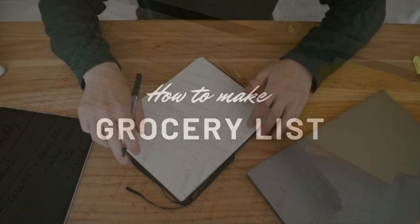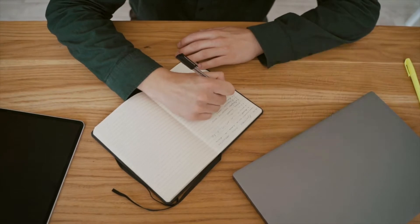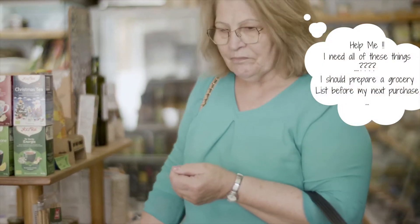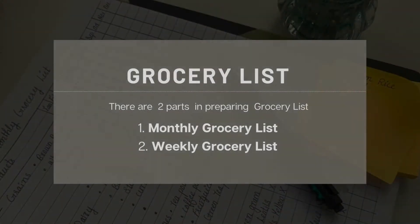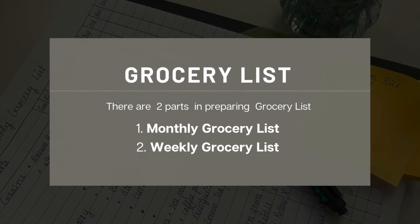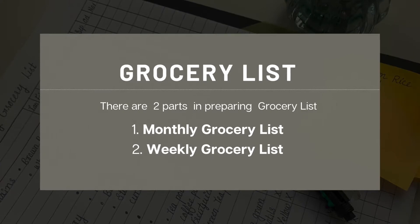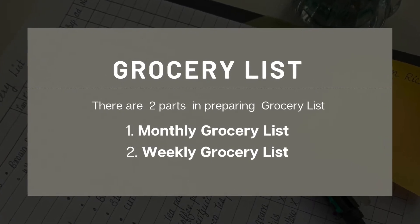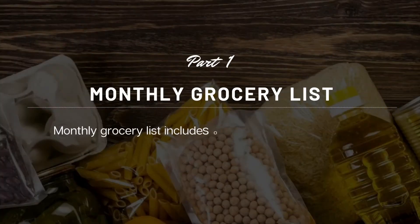Today's video is all about how to make a grocery list. Everyone is confused on making a grocery list — hope this video will help you to prepare your own. Without any delay, let's get into the video. Based on frequency of grocery shopping, we divided the grocery list into two parts: the first part is the monthly grocery list and the second part is the weekly grocery list.